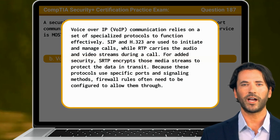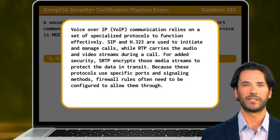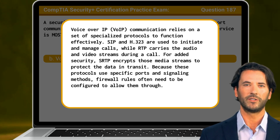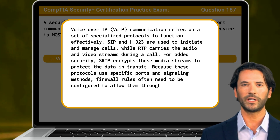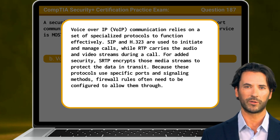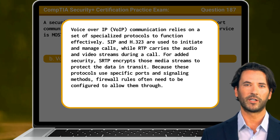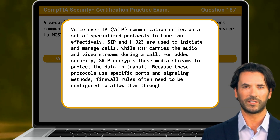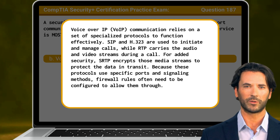Voice over IP communication relies on a set of specialized protocols to function effectively. SIP and H323 are used to initiate and manage calls, while RTP carries the audio and video streams during the call. For added security, SRTP encrypts those media streams to protect the data in transit. Because these protocols use specific ports and signaling methods, firewall rules often need to be configured to allow them through.